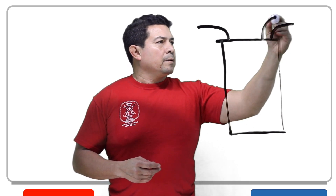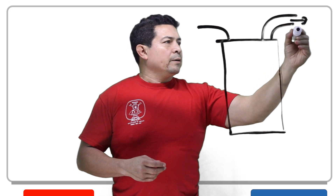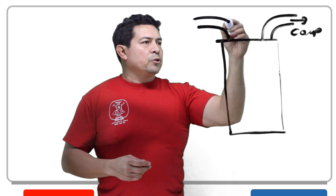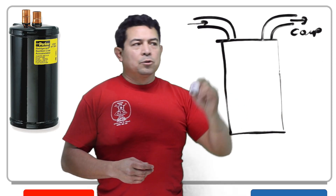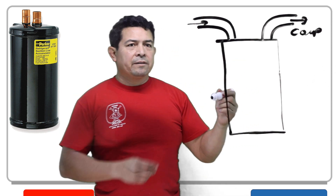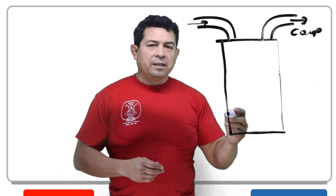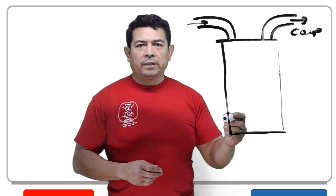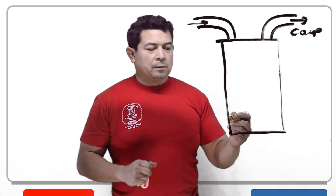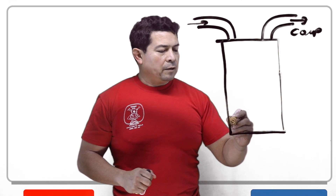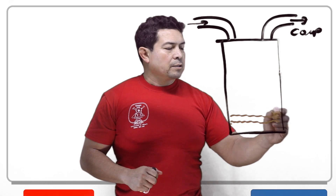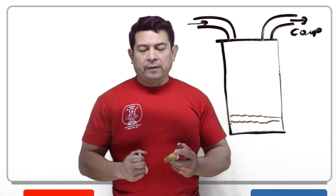Refrigerant is going to be going out to the compressor and refrigerant is going to be coming in to the accumulator here. But what happens is, inside of it, they have re-piped it so that if there is liquid refrigerant coming back, it's going to sit at the bottom of the accumulator along with any oil that might be trapped — it's going to be held right there.